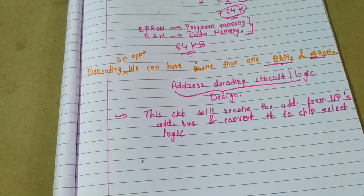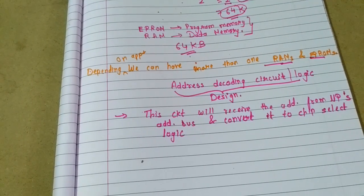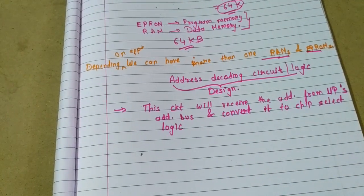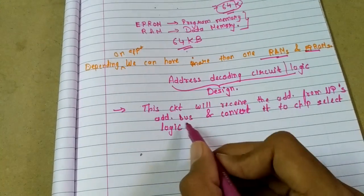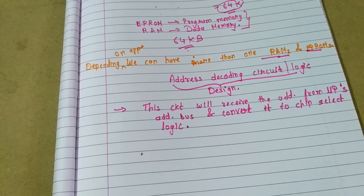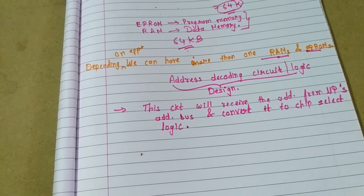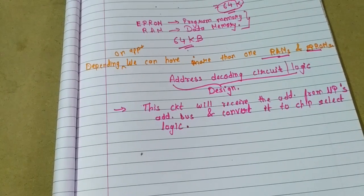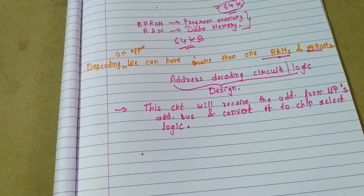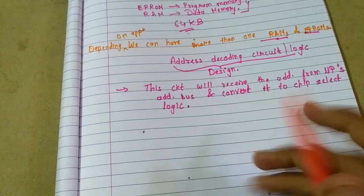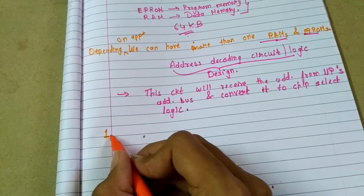This chip select logic will select the required memory module or IO device. Here we are concerned with memory only, so it will select the required memory. We will see later how it does this. Now we have two methods for this decoding logic.